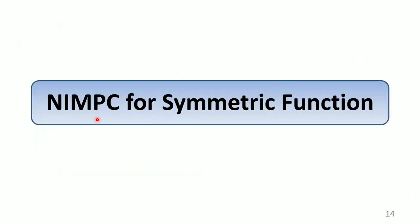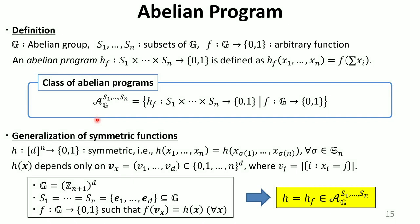Next, we provide our NIMC protocols for symmetric functions. Before giving the formal definition, we introduce a generalized notion called abelian programs. Let G be an abelian group, S_1 to S_N be subsets of G, and F be an arbitrary function from G to {0,1}. Then an abelian program H_F takes as input N tuples from the product set of S_1 to S_N, and computes the function F on the sum of N inputs. The class of abelian programs is the collection of all H_F, each associated with function F.